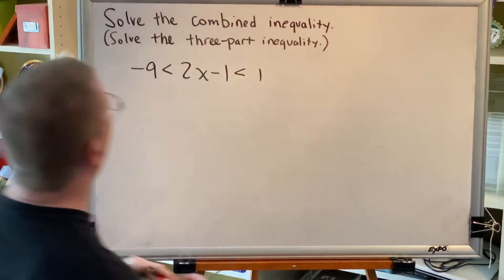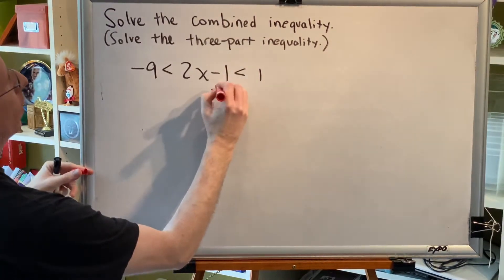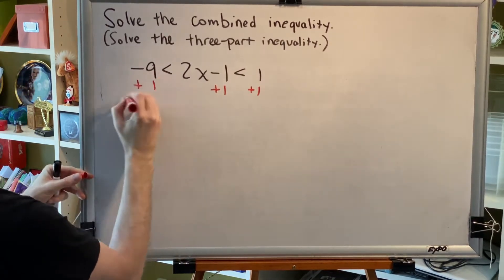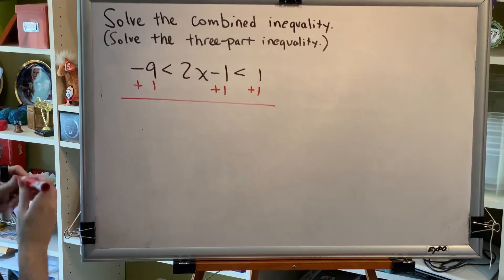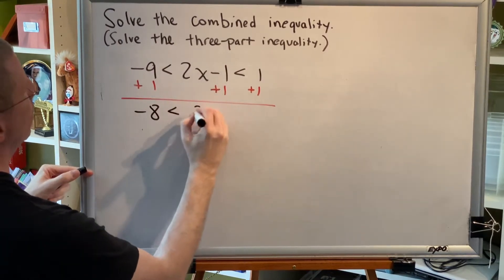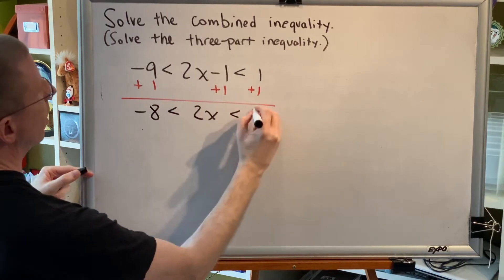So the first step is to add 1. But if we add 1 in the middle, we must also add 1 to the right and left zones. This gives us negative 8 less than 2x less than 2.